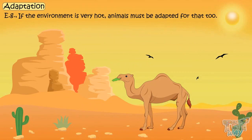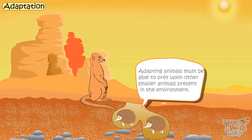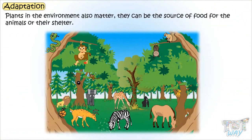Other animals in the environment also matter. Adapting animals must be able to escape from predators and also must be able to prey upon other smaller animals present in the environment. Plants in the environment also matter — they can be a source of food for the animals or their shelter.